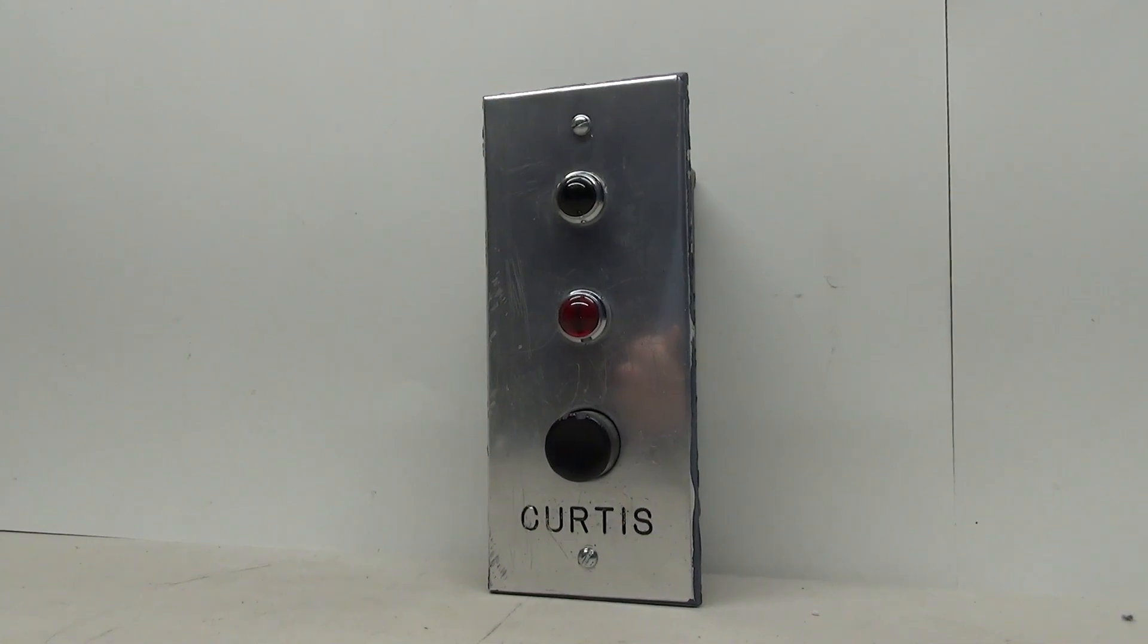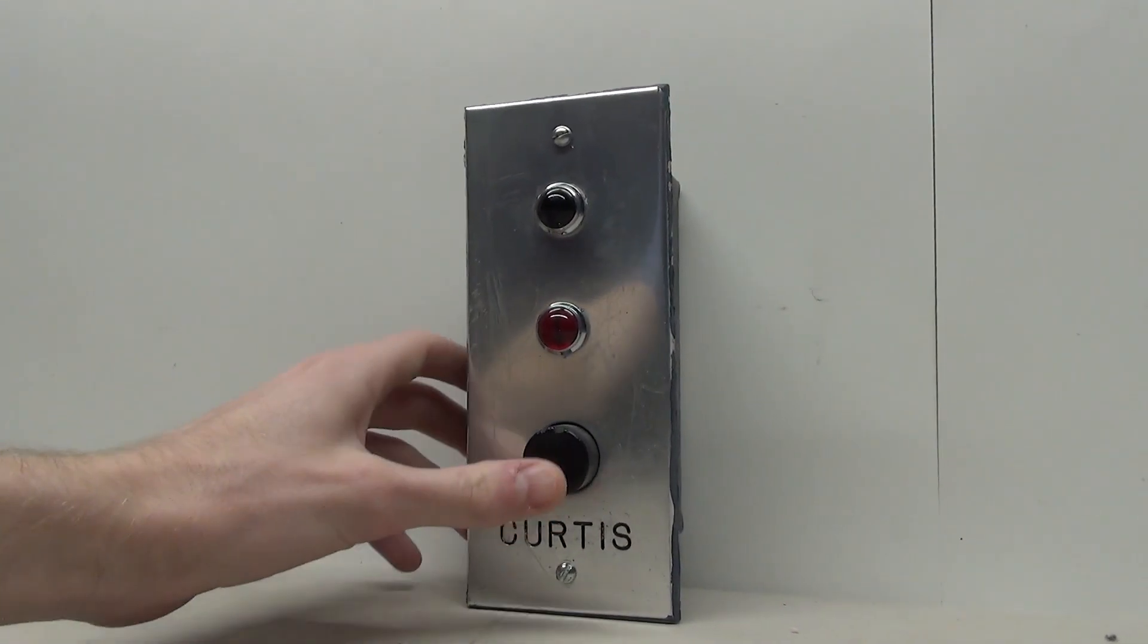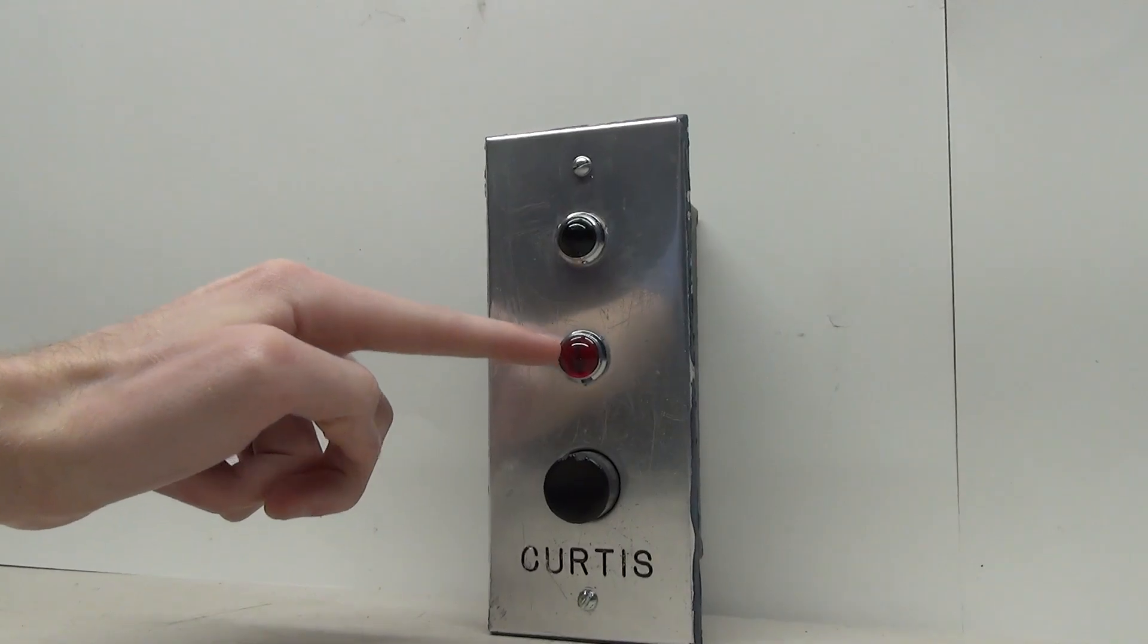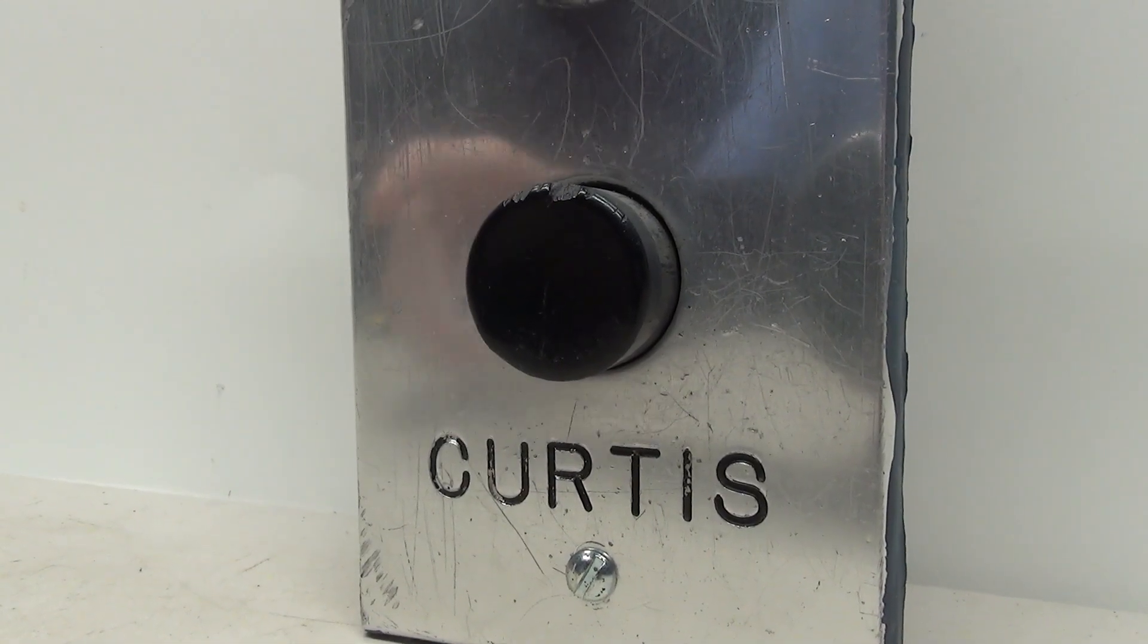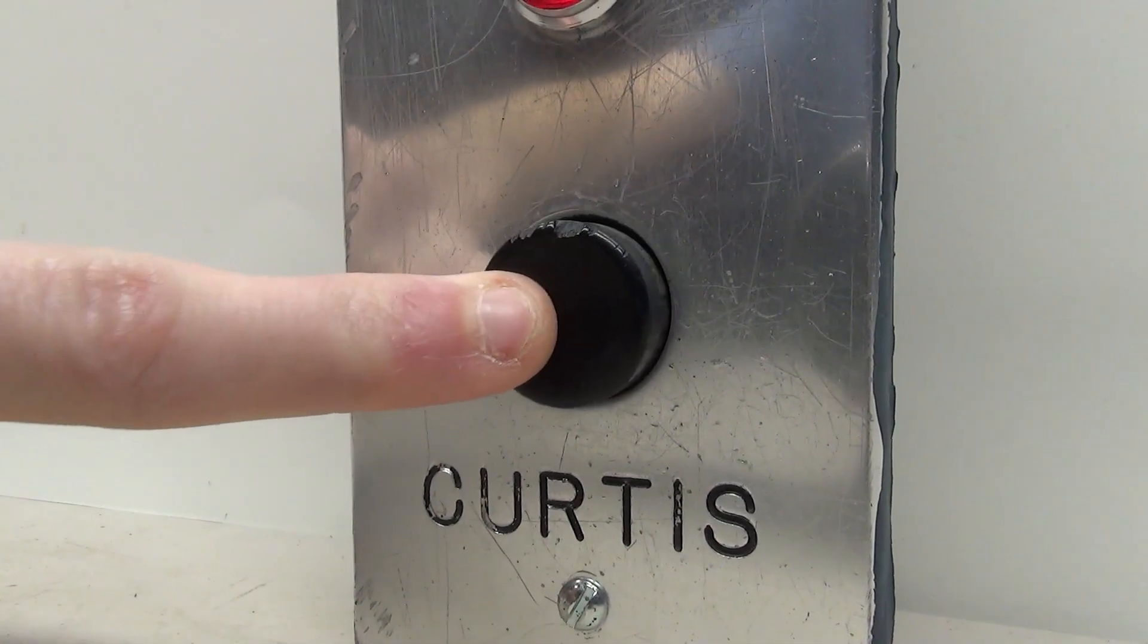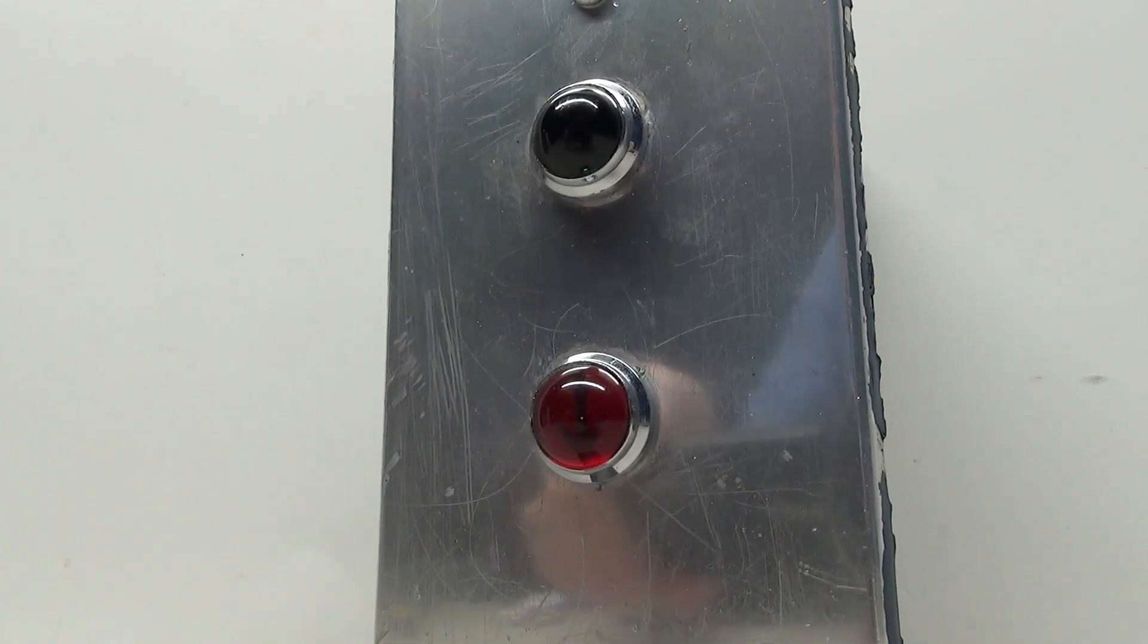So this here is a really neat old elevator fixture and it has a single button and an up and a down light. In this project I'm going to make it where pressing in on the button turns on both of the lights.